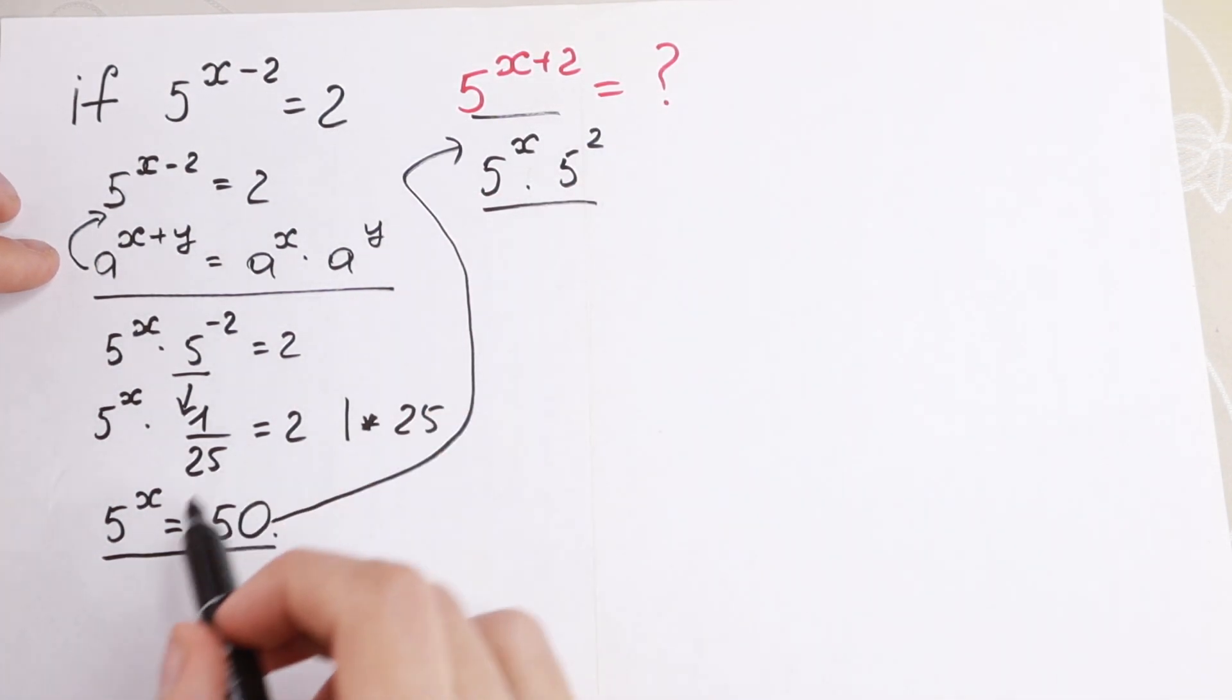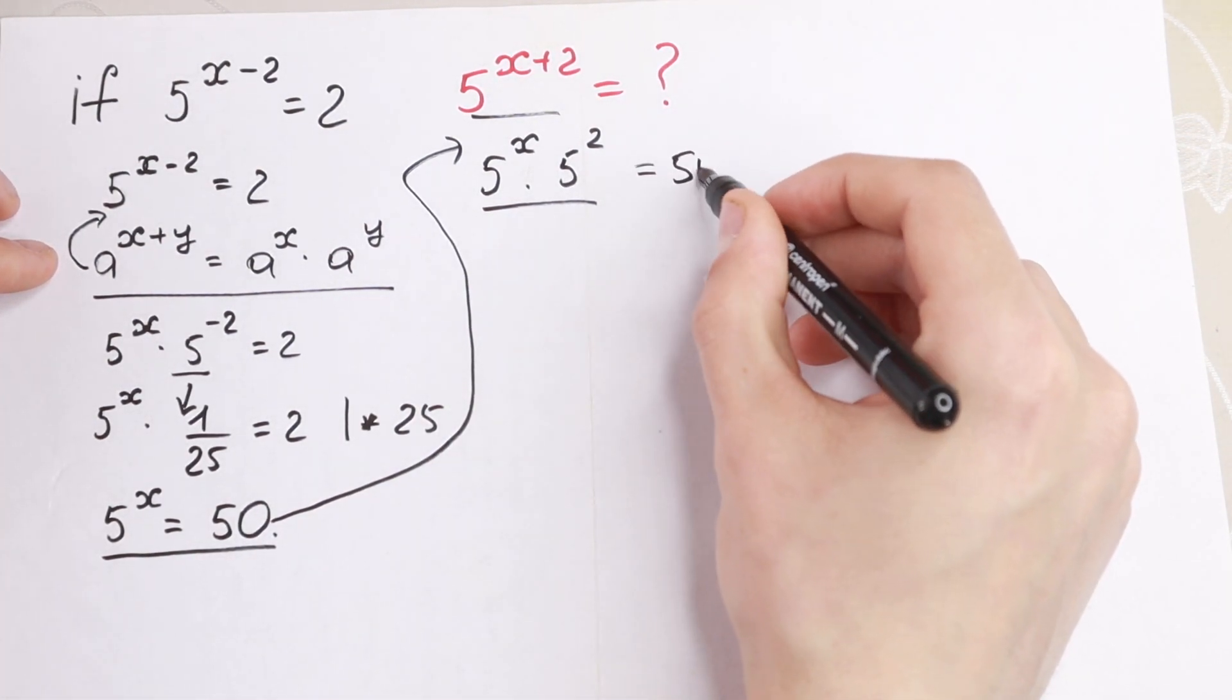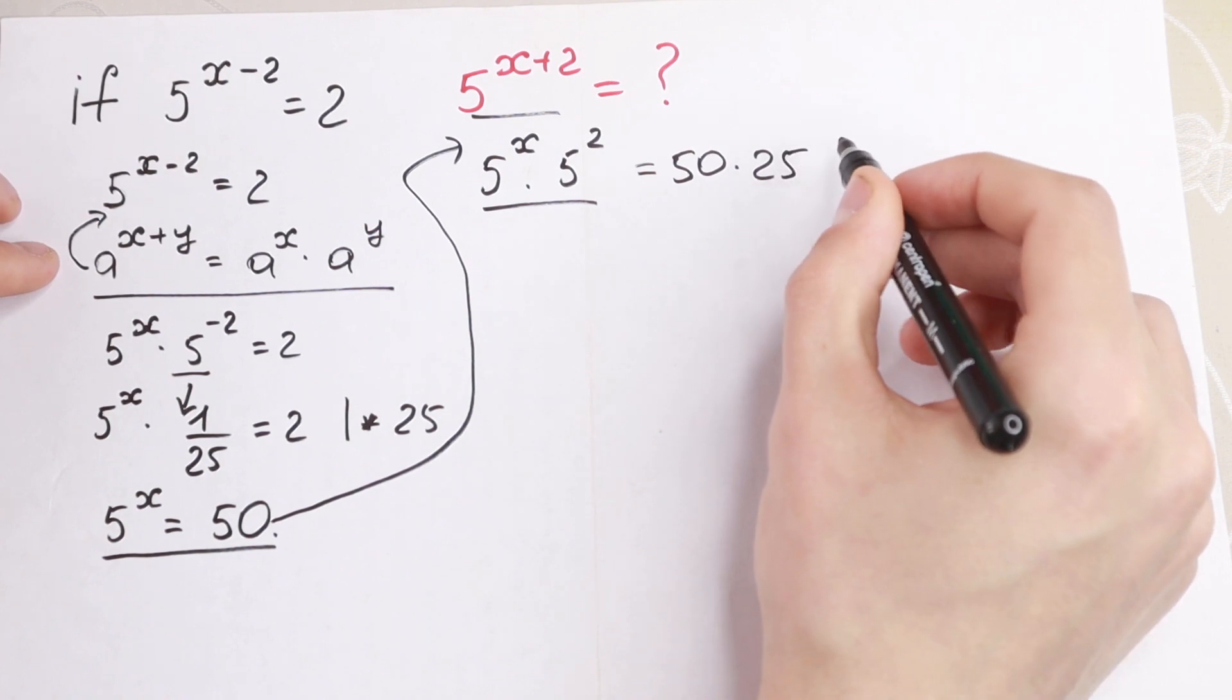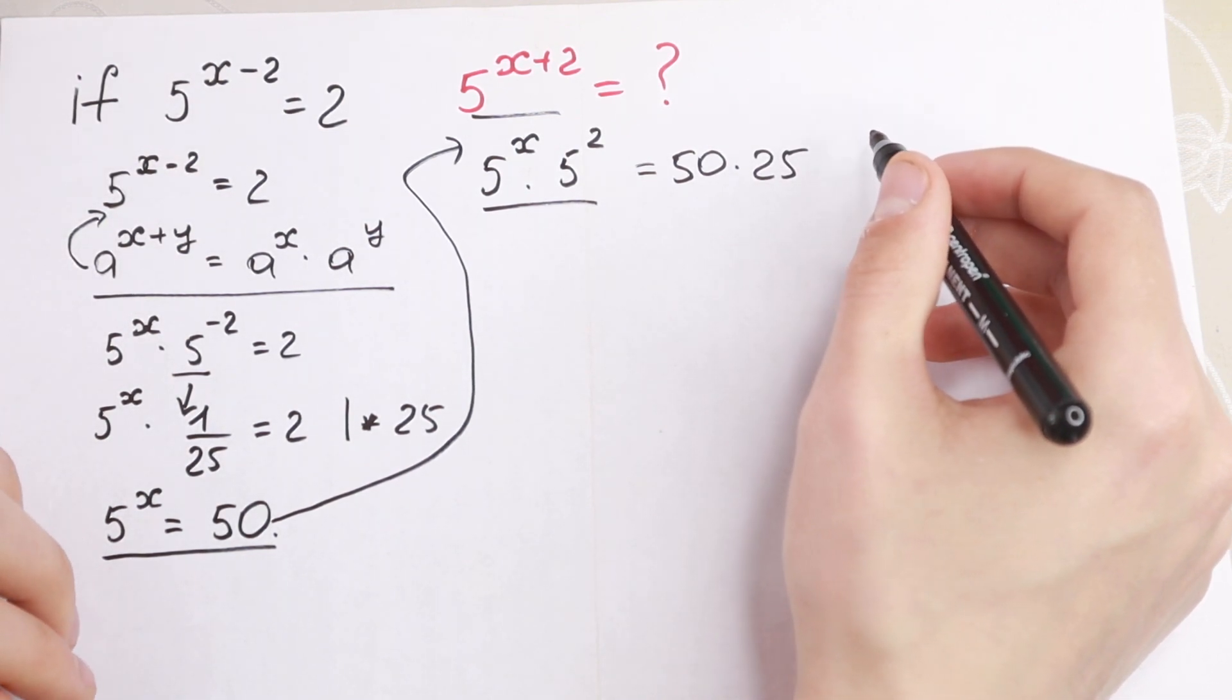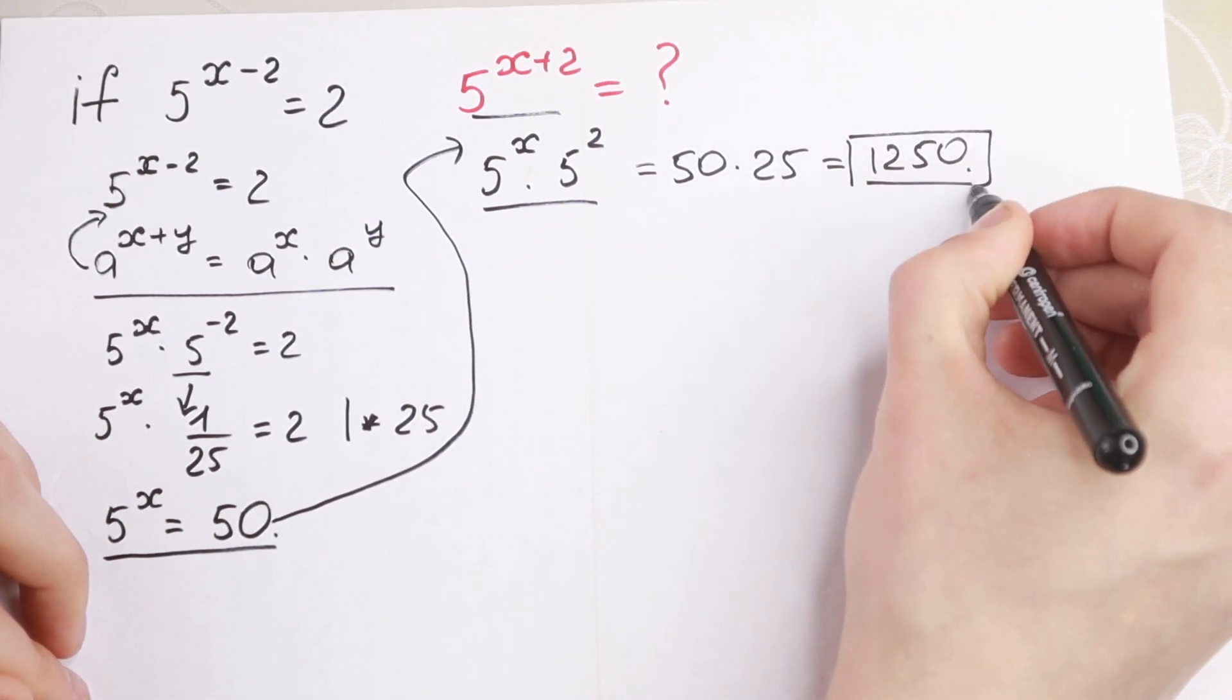And take a look, 5 to the power x equals 50. And from here, 50 times 25. And if we multiply it, we will have our answer: 1250. And this is our answer.